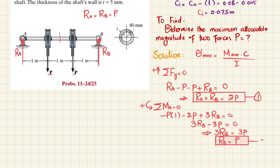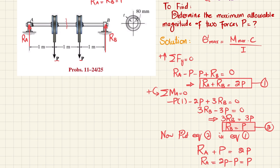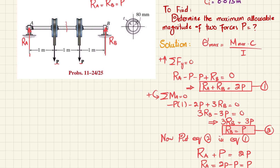That is the value of Rb. Substituting equation 2 into equation 1: Ra plus P equals 2P, so Ra equals P as well. Both reactions Ra and Rb equal P, which confirms symmetry. Now we move toward drawing the shear force and bending moment diagrams.